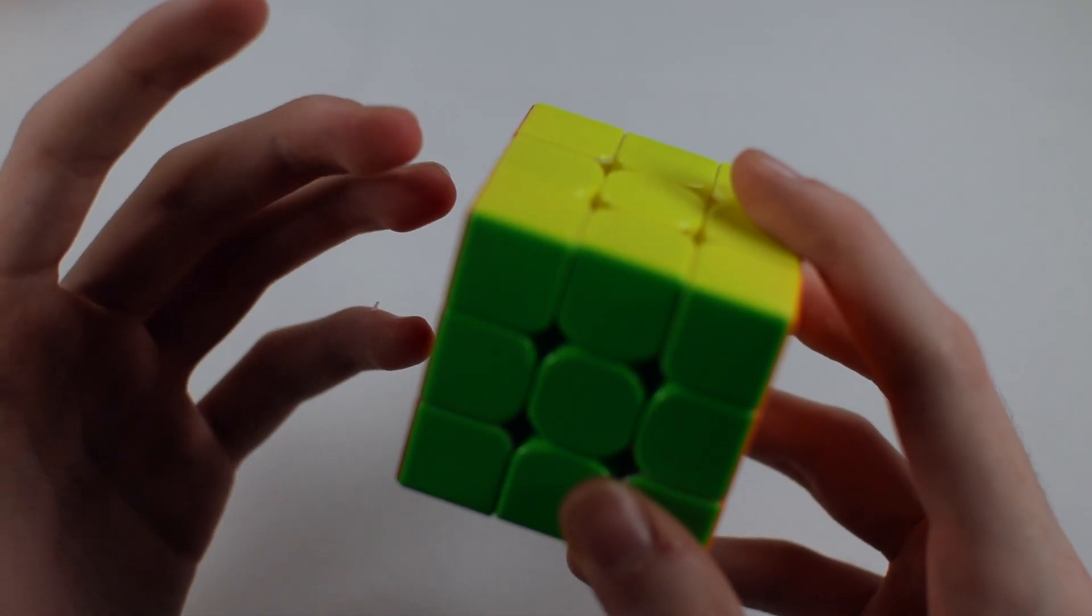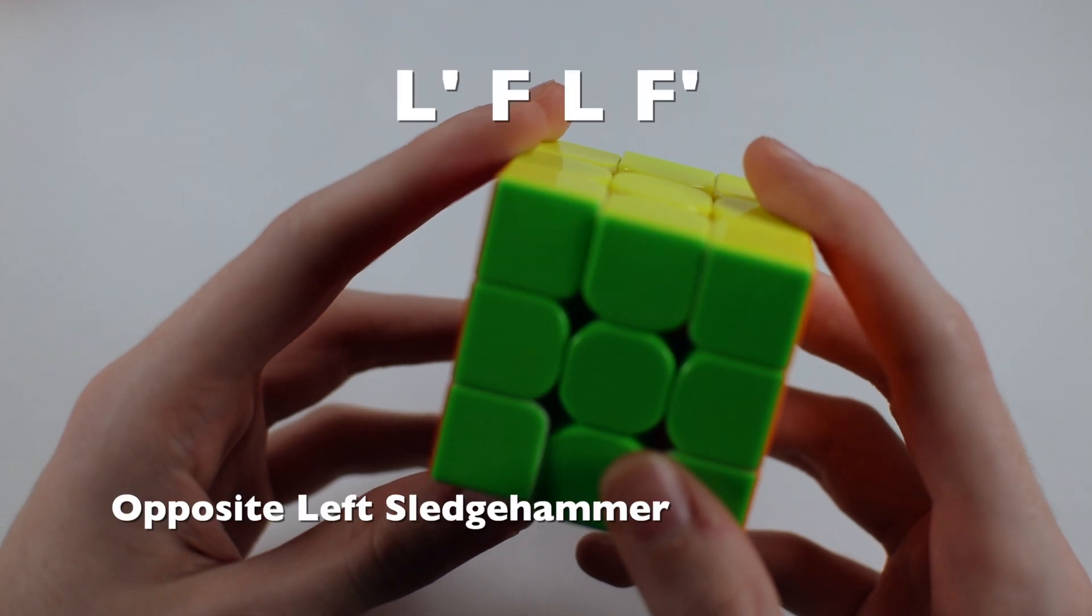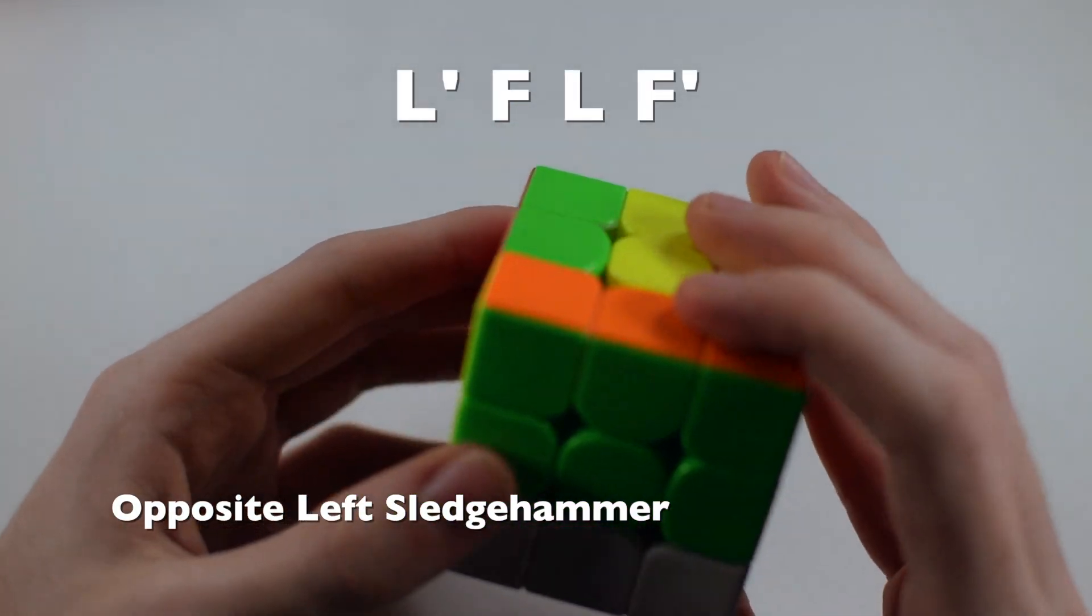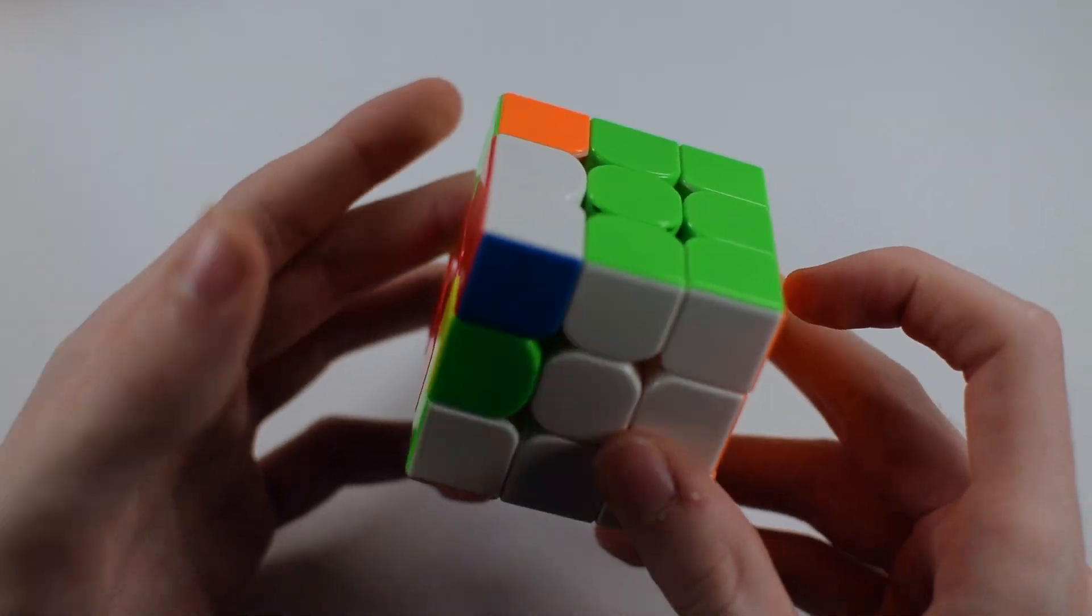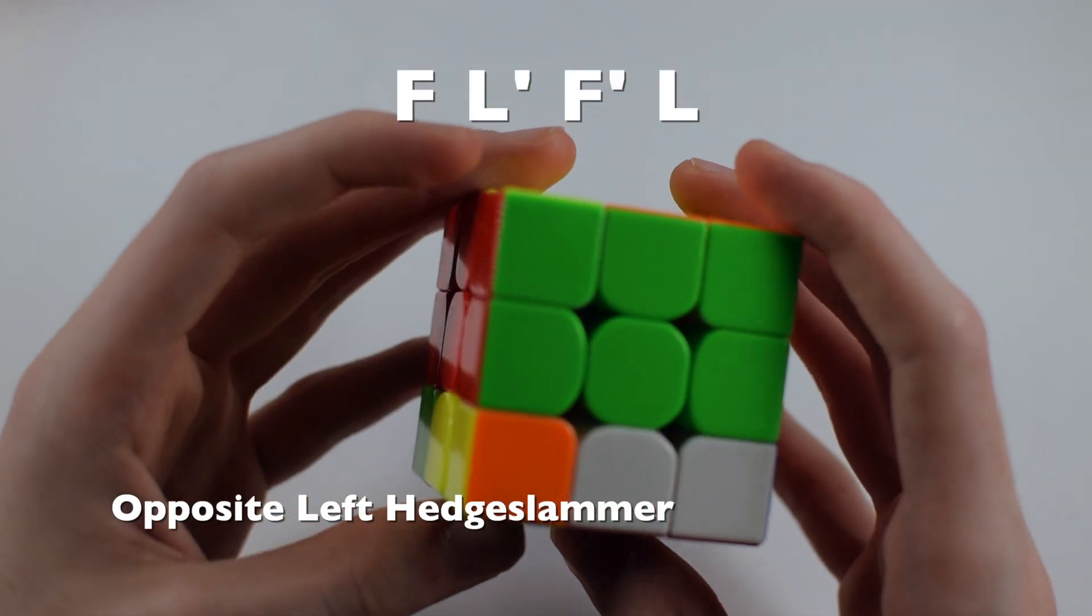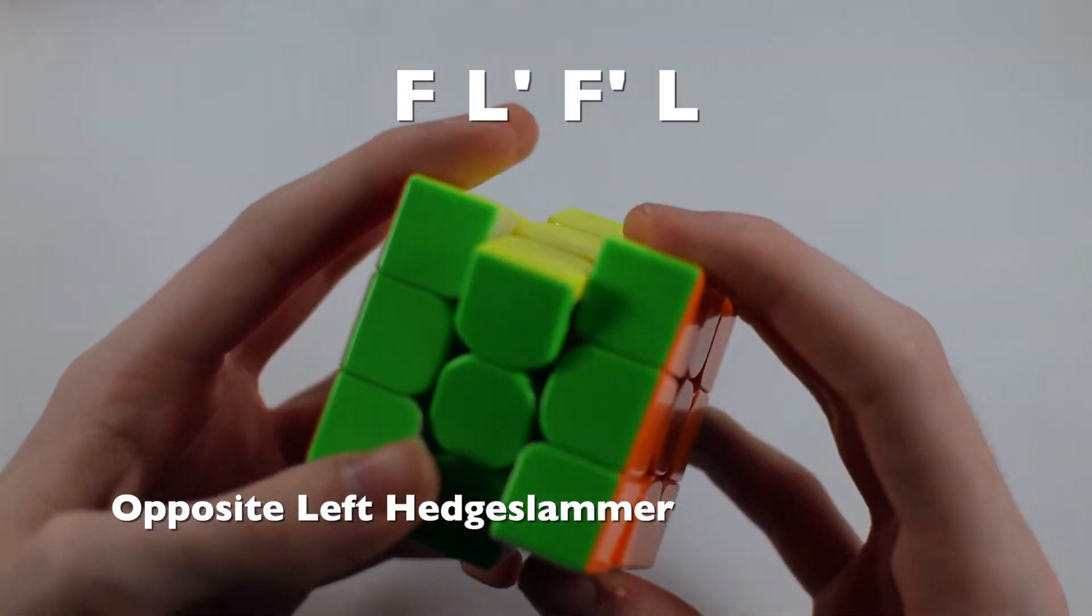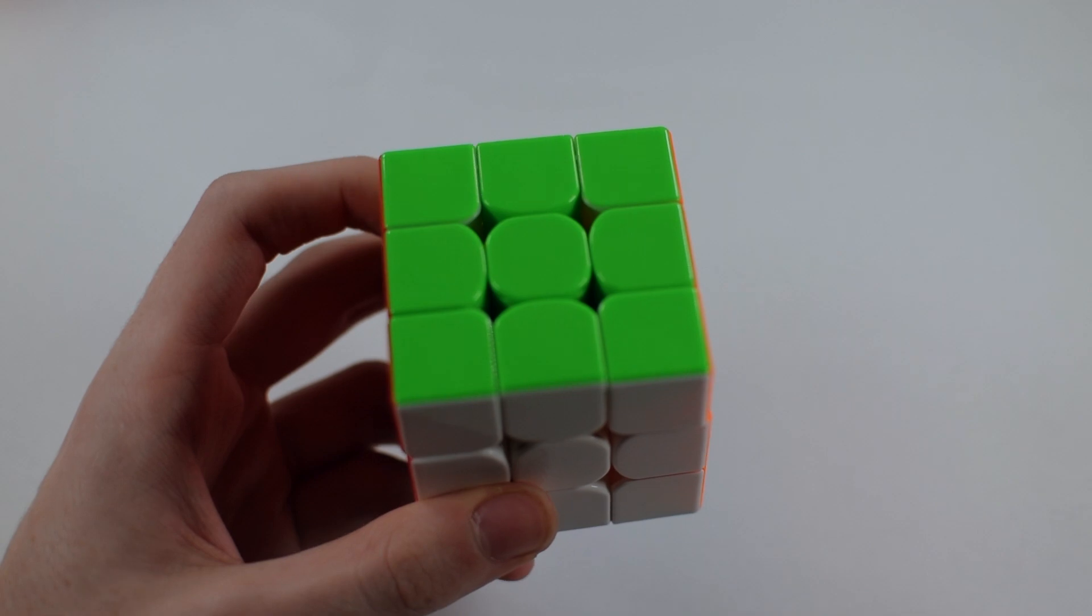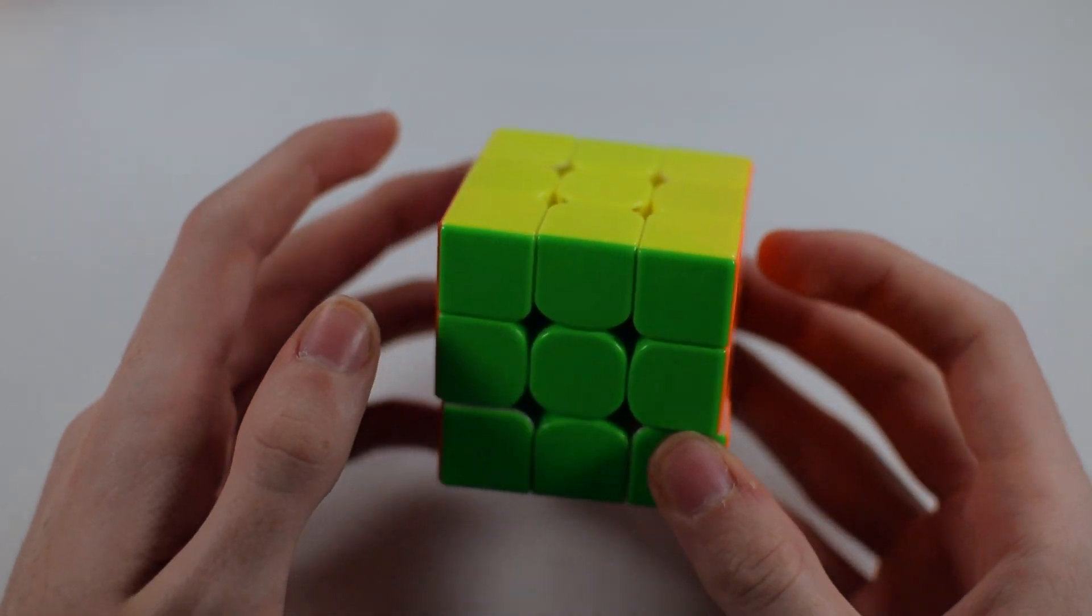Then there is the opposite of left sledgehammer and this one is L' F L F'. And then the opposite of left hedge slammer is F L' F' L. I've stumbled along. There's a lot of different cases and it's kind of hard to remember which ones were which.